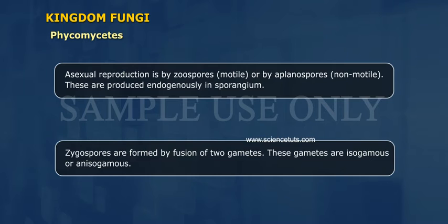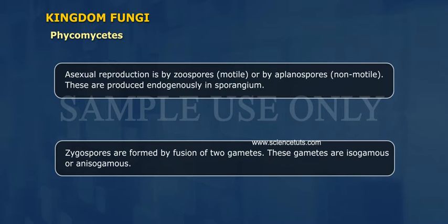Zygospores are formed by fusion of two gametes. These gametes are isogametes or anisogametes.